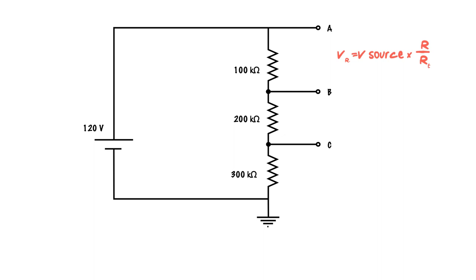So in this case here, if I have 100k ohms, I'm going to take 100 over 600 because I've got 300 plus 200 plus 100. The total circuit resistance right now is 600k ohms. So we can work out our volt drops across each individual one using this formula.